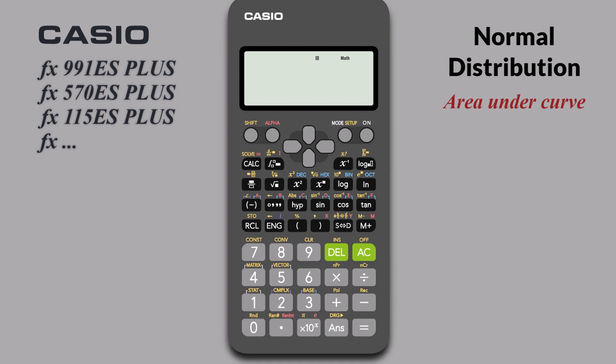In this video, I'm going to show how to use the Casio FX ES Plus Series Calculator to quickly generate standard normal distribution areas or probabilities that we typically have to look up in the Z tables.